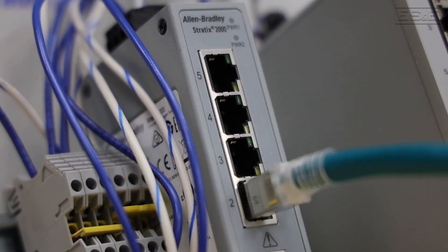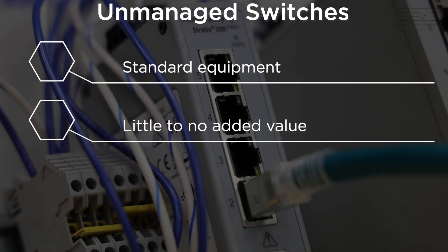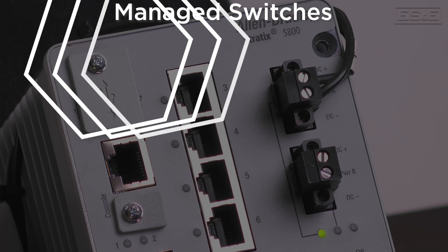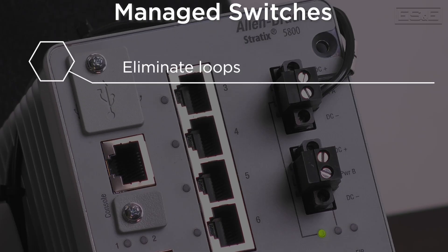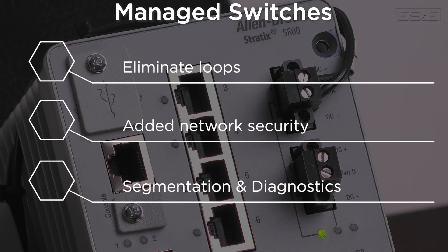Terry, this has been a great explanation of the difference between a managed and an unmanaged switch. Can you do a quick summary? To sum it up simply, unmanaged switches are just standard pieces of equipment that offer little to no value to your facility, especially in a crisis situation. Using managed switches will eliminate loops which could bring down an entire network. They also add a level of security, VLAN segmentation, and diagnostics to help troubleshoot network issues. We hope this has helped you make the right networking decisions for your manufacturing systems. If you have any questions or would like more information, please contact your local ES&E account manager or automation specialist.